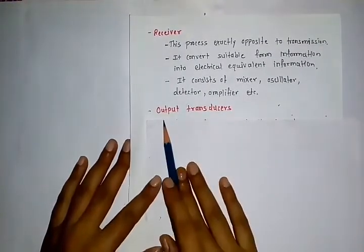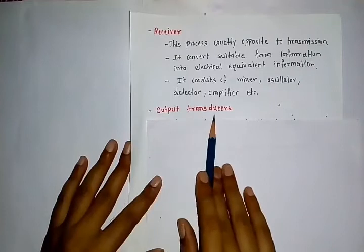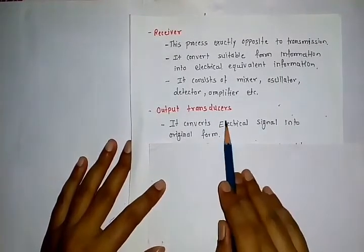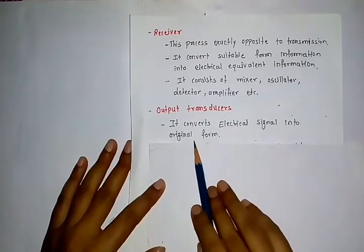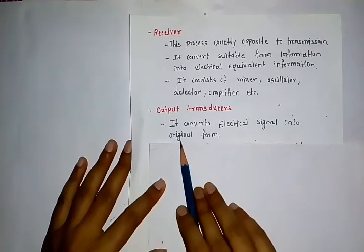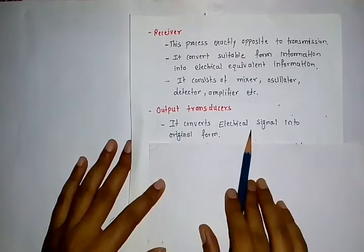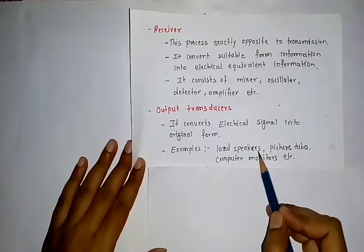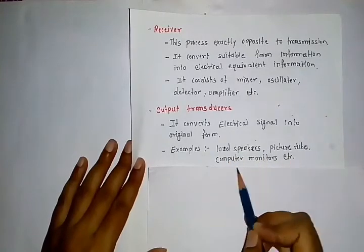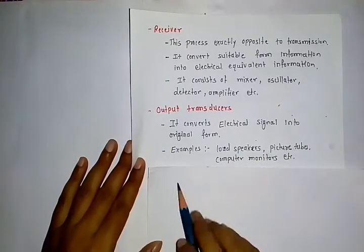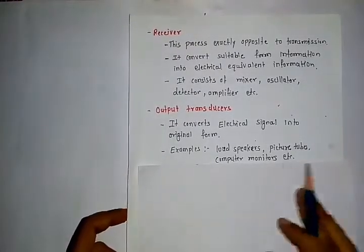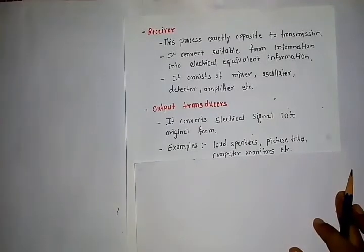The last block is the output transducer. It converts the electrical signal back into the original form. Examples of output transducers are loudspeakers, picture tubes, and computer monitors. These are all the detailed explanations of the block diagram elements.